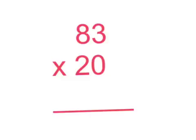Today's problem is 83 times 20. Another way we can do this problem is the distributive property of multiplication.